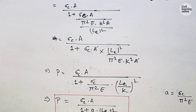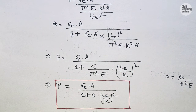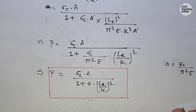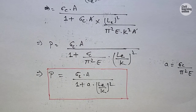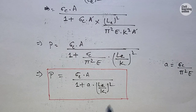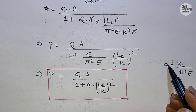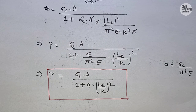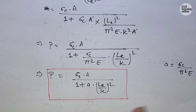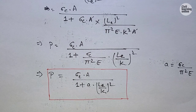Remember that when solving a numerical problem using Rankine's equation, you will be provided with the value of the ultimate crushing stress sigma_C and the value of Rankine's constant a. Different materials such as wrought iron, cast iron, mild steel, and timber have different values, and these will be given in the examination. Practice solving numericals using these equations to build confidence.